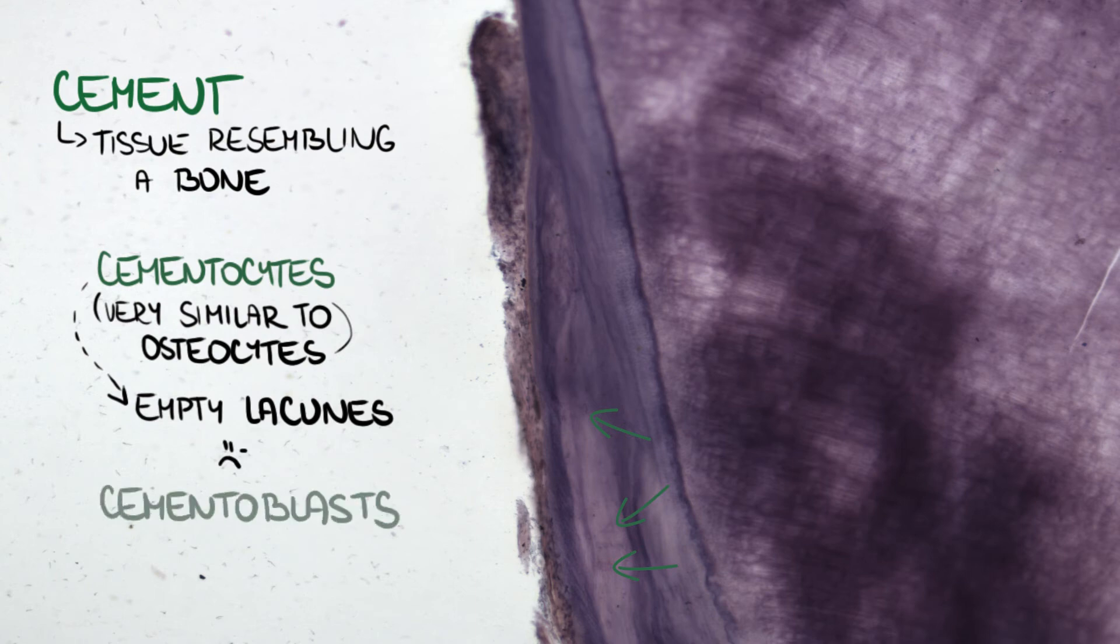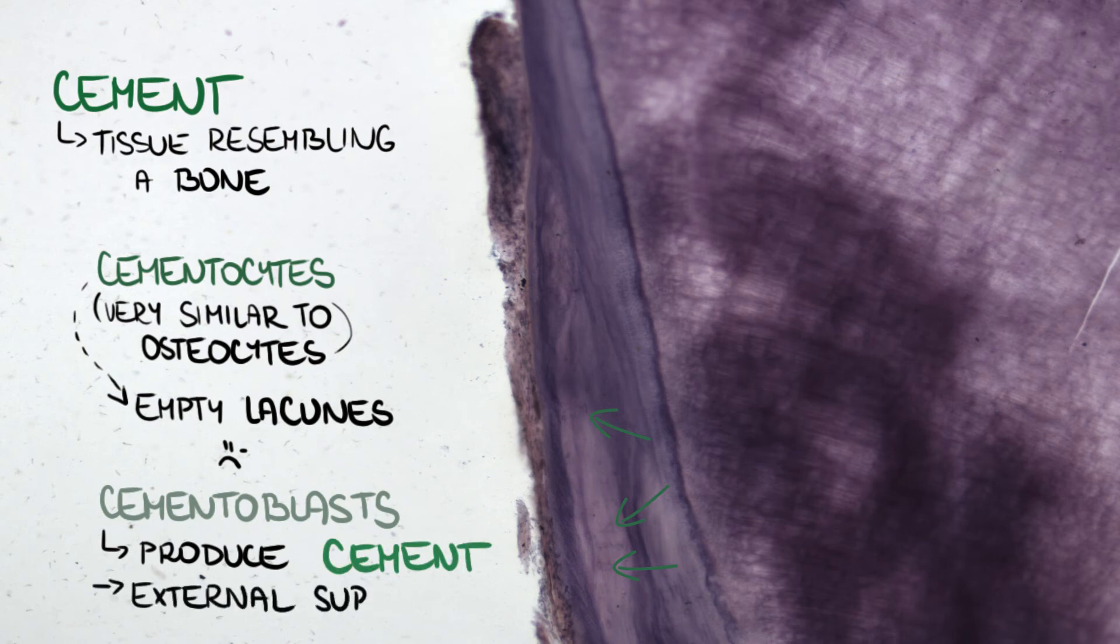Cementoblasts are cells producing cement and can be found on its external surface. Unfortunately we cannot see them in our slide. They are subsequently embedded in the cement substance and transform into cementocytes.